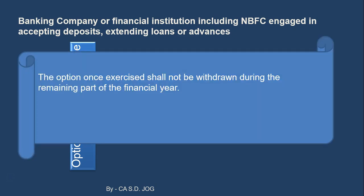The option once exercised shall not be withdrawn during the remaining part of the financial year. So if a particular bank decided to go by the second option of 50% — that is the simpler option — they cannot change back to option 1 during that particular financial year. They have to wait for the completion of the financial year. In the next financial year they can again exercise option 1, or if they want, switch to the second option.